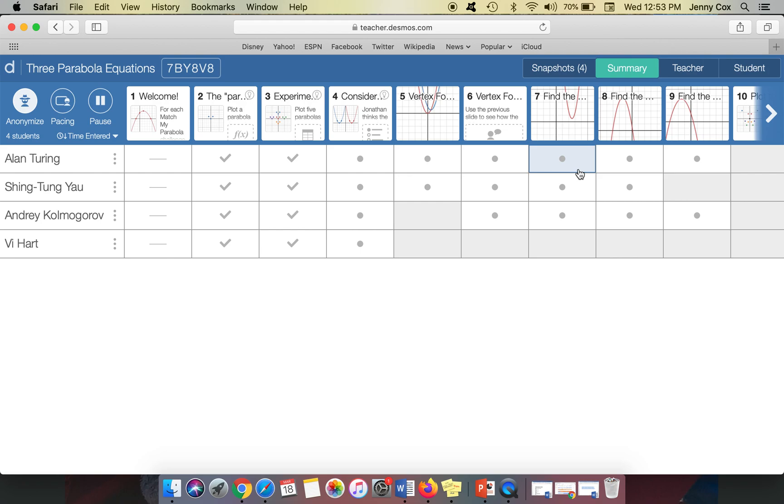And you can discuss that, but it's totally anonymous. So you can say, this person was really close, but how can we adjust their vertex so that it's in the correct spot?